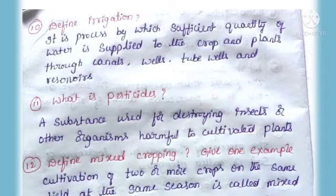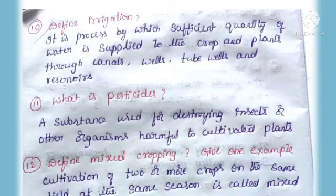Tenth question: Define irrigation. Answer: It is the process by which a sufficient quantity of water is supplied to crops and plants through channels, wells, tube wells, and reservoirs.